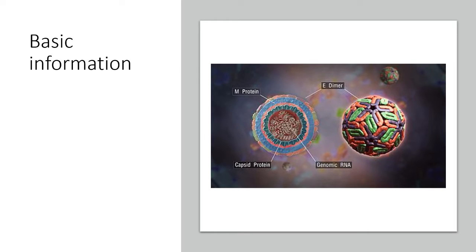What is the basic information about the dengue virus? It's a mosquito-borne viral disease that occurs in tropical and subtropical areas, which is common in India, Africa, Sri Lanka, Bangladesh, Pakistan, and all these different countries.